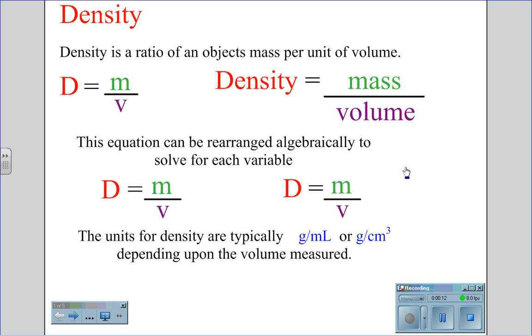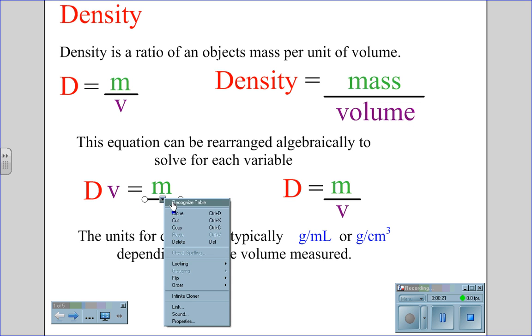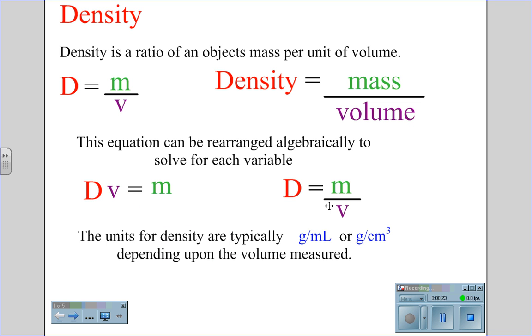This equation can be arranged algebraically to solve for each variable. Density times the volume would equal the mass, and density times volume equals the mass, therefore volume equals mass divided by density.